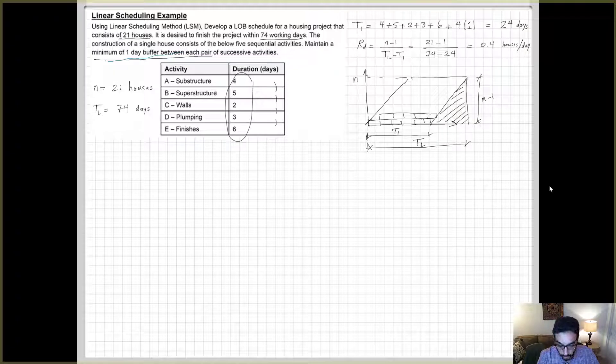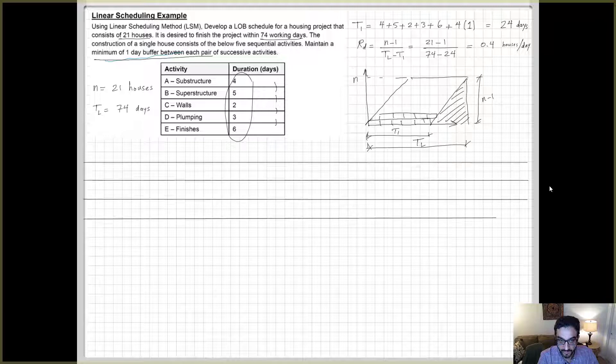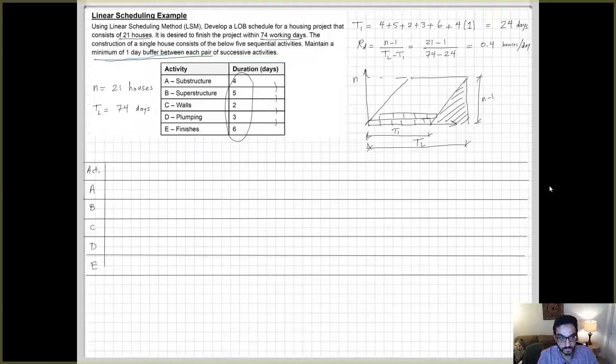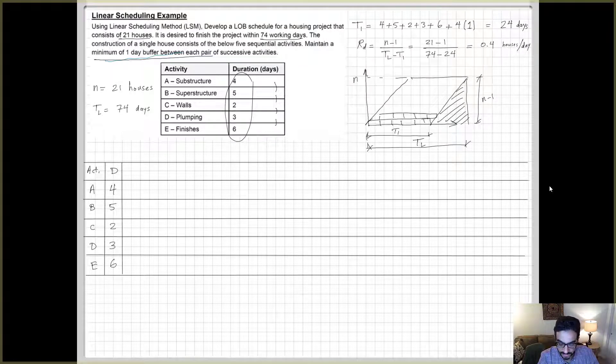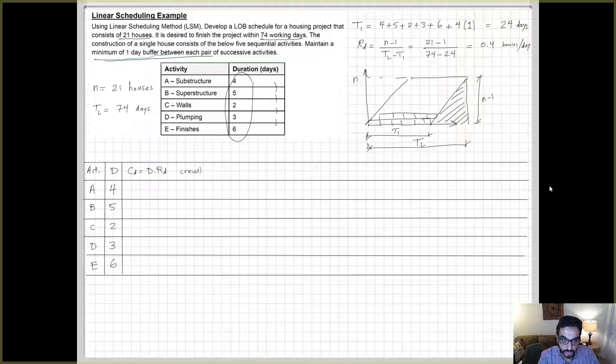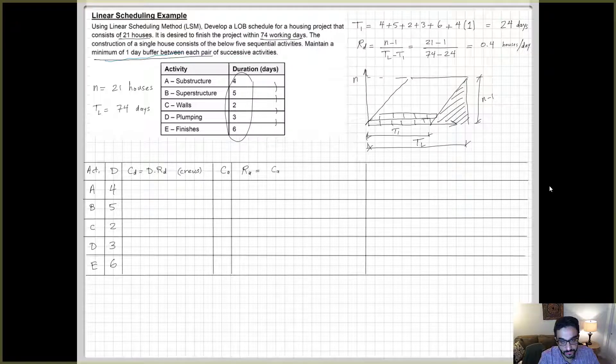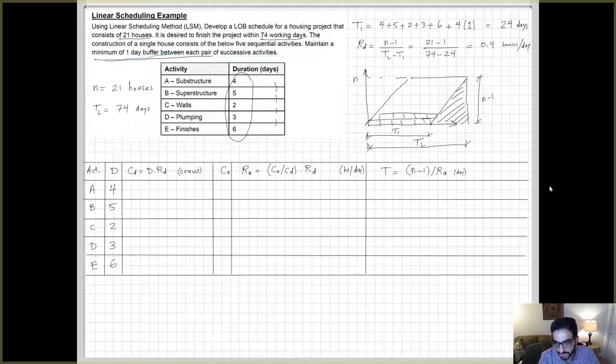To move forward in the problem and draw the line of balance diagram, I need to prep values for me to be able to draw the diagram. So this is the table that we're going to use. I will list all the activities and their duration, and then I will have the following columns. So we need to calculate CD, CA, RA, T, and then of course the buffers are given to us. I'm listing them here to be handy when I look at this table at the next slide and start drawing the line of balance diagram.